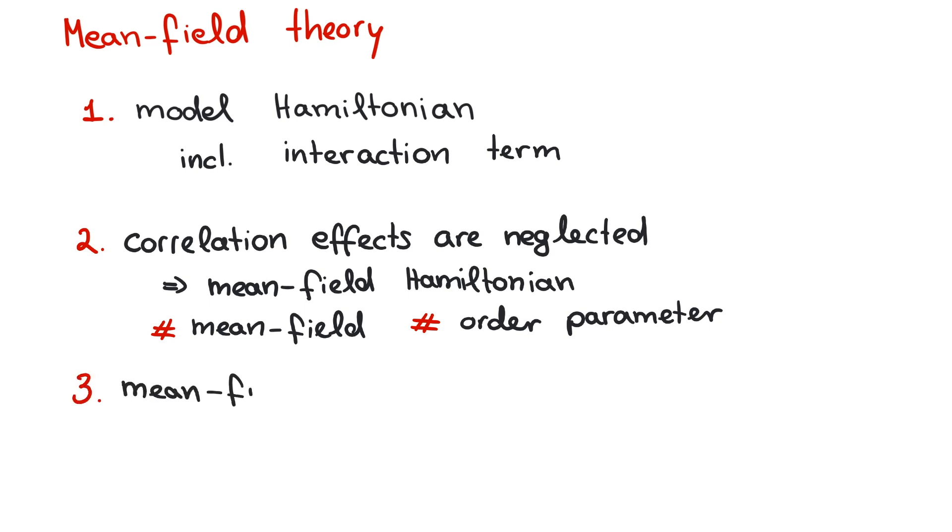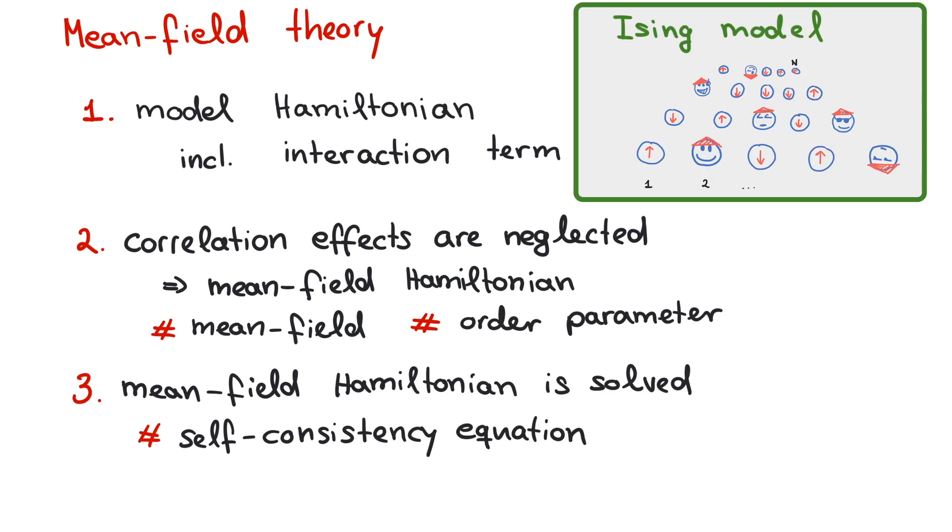And third, the mean field Hamiltonian is solved, which yields a self-consistency equation. In the simplest case, the self-consistency equation is a transcendental equation. That is, it can be solved by plotting both sides of the equation. That's what we will obtain for the Ising model. However, for other models, the self-consistency equation has to be solved iteratively. Don't panic if that was too fast. We will now demonstrate each step by means of the Ising model.